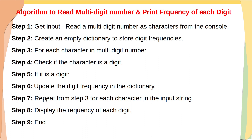We repeat from step three to step seven for each character in the multi-digit number. If the checked character is not a digit, we skip those steps and go directly to the next character. At the end, we display the frequency of each digit.